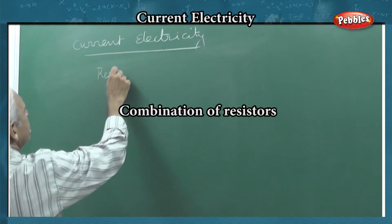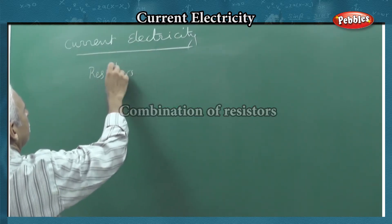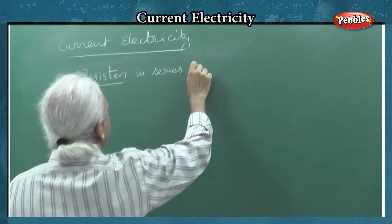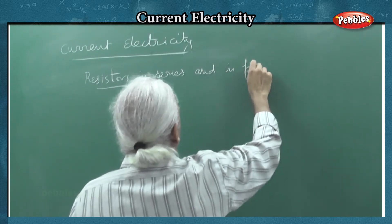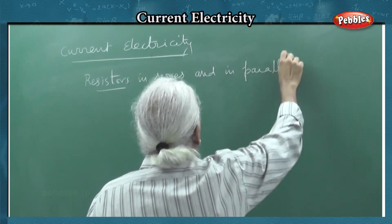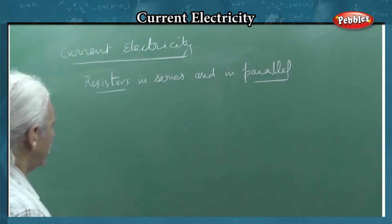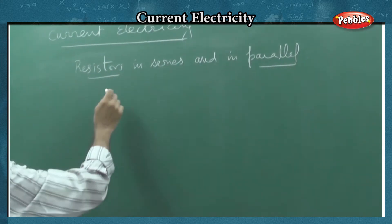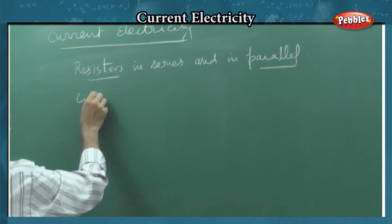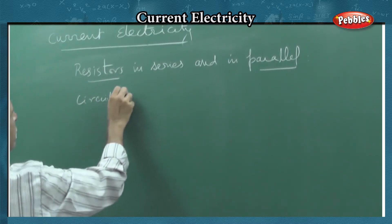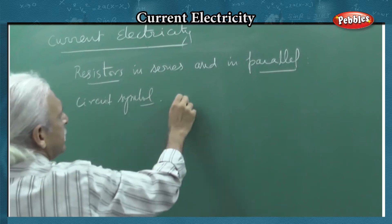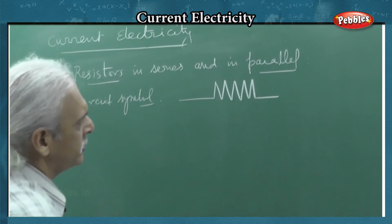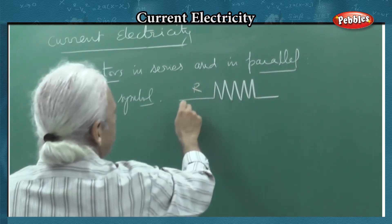Now, combination of resistors in series and in parallel. Series will reduce to equivalent resistance, parallel will be able to do it. So, what is the circuit symbol of a resistor? The circuit symbol of a resistor is a zigzag or triangular shape — this is the circuit symbol of a resistor. It is not a terminal; it is important.